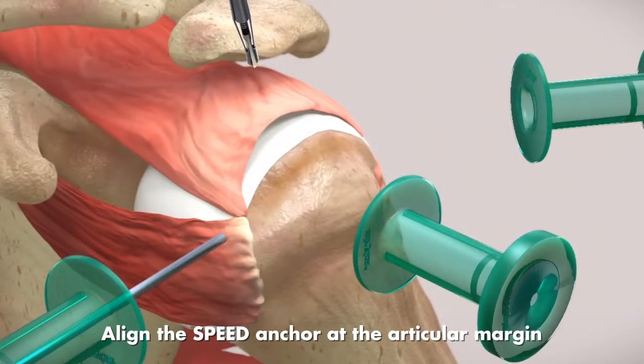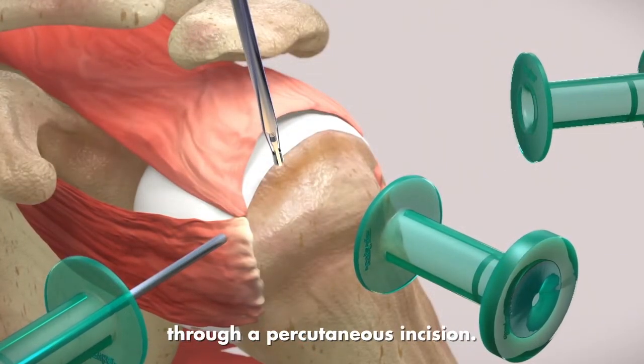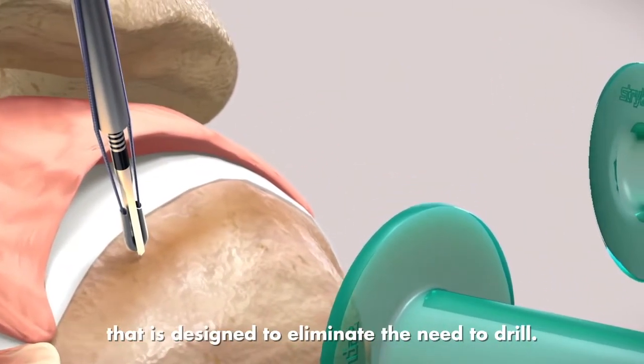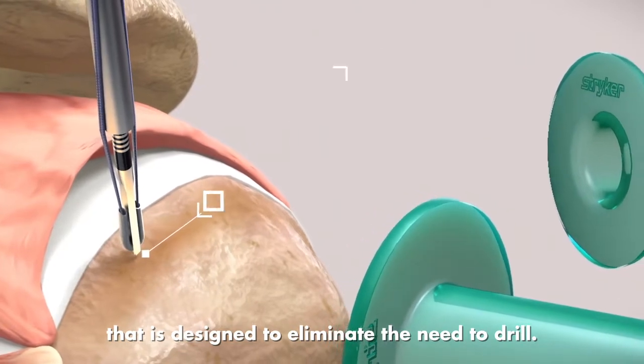Align the speed anchor at the articular margin through a percutaneous incision. The ICONICS SPEED features a self-punching trocar tip that is designed to eliminate the need to drill.